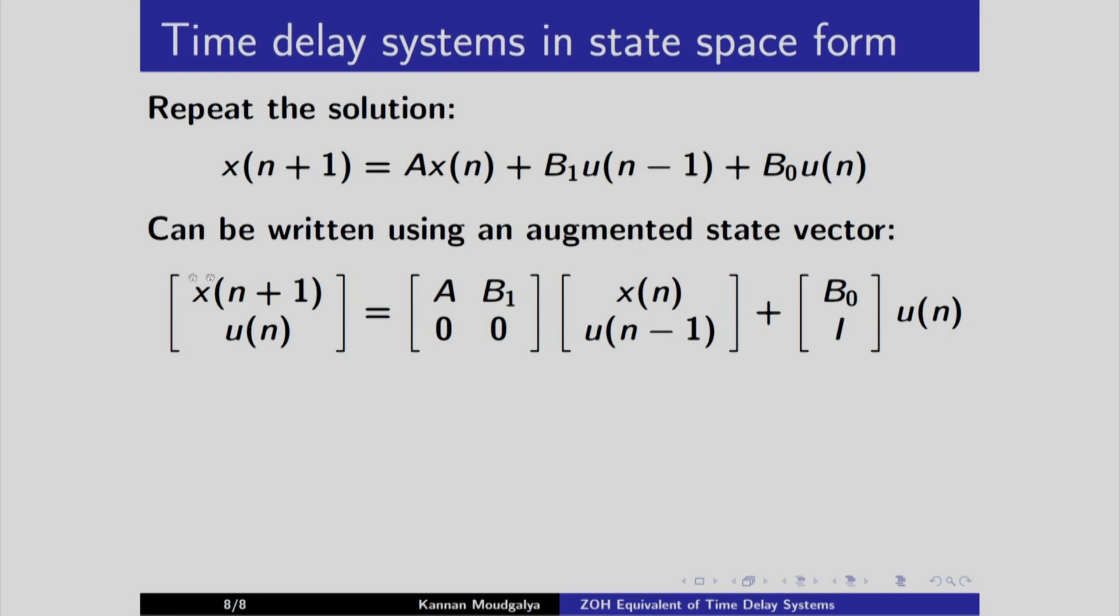If you multiply a into x of n plus b1 into u of n minus 1, that is the first line and here the contribution to the first line is b0 into u n. And the second equation says u n equals, this does not contribute anything, from here you get u n. So this is indeed valid.